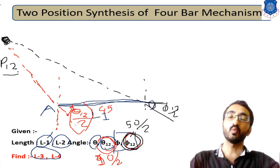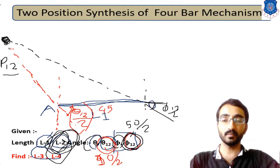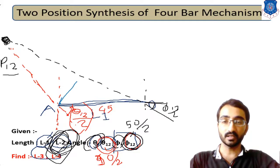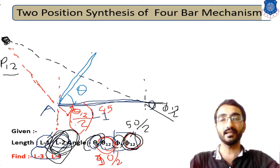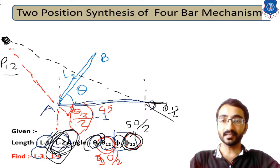Now the remaining data includes theta and phi. Since length L2 is given, plot link number 2 at angle theta from point A, giving us point B. Now connect this B point with the pole point P-12.